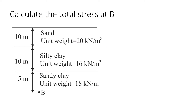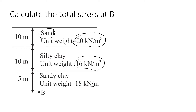Now let's look at an example where we have three different layers. We have a layer of sand with a unit weight of 20 kN per cubic meter, silty clay with a unit weight of 16 kN per cubic meter, and another layer of sandy clay with a unit weight of 18 kN per cubic meter. We would like to estimate the stresses acting at point B.